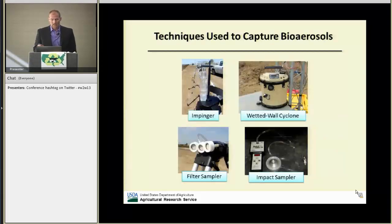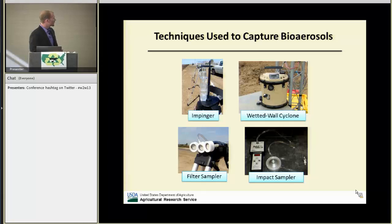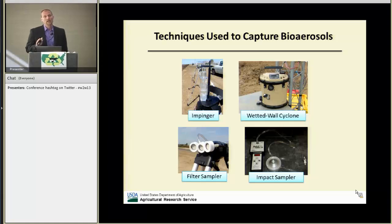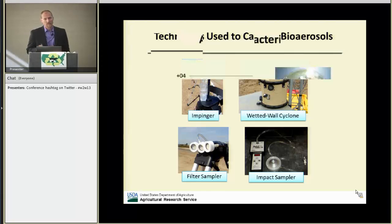Some of the techniques we used to capture bioaerosols include glass impingers, a wetted wall cyclone, and filter samplers — such as an open-face filter for capturing airborne endotoxin — and an impact sampler, single stage, for fungi.